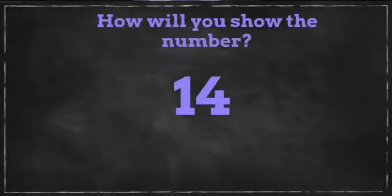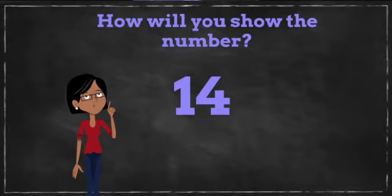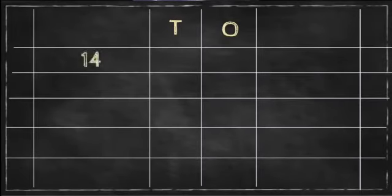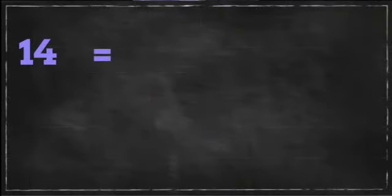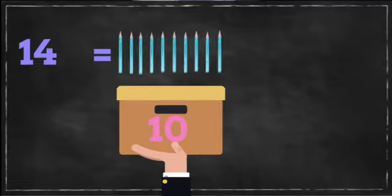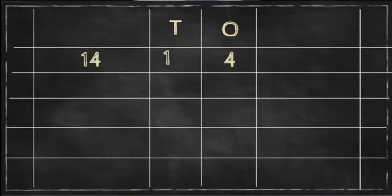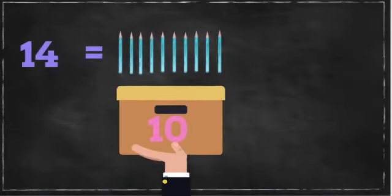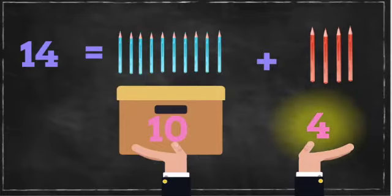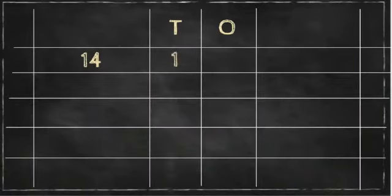Can you tell me how will I show number 14? What will I do? One, four, fourteen. So under T I have written 1. So I will pick up a box of 10 pencils. One, ten. 10 pencils, 1 box. And under O it is 4. So I will pick up 4 more in my hand. So 1 ten and 4 ones is 14.